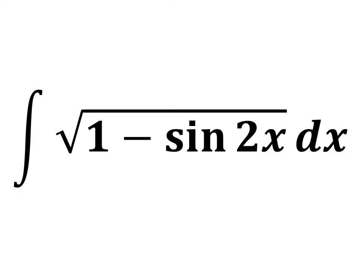To solve this, first we will have to get rid of the square root. To do that, we have to convert 1 minus sine of 2 times x into a perfect square.